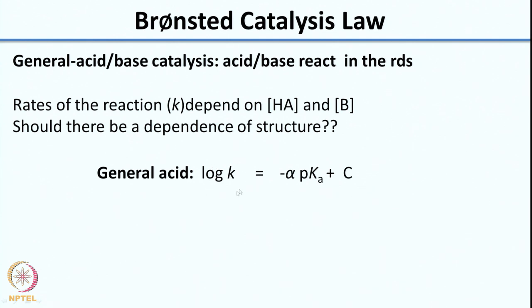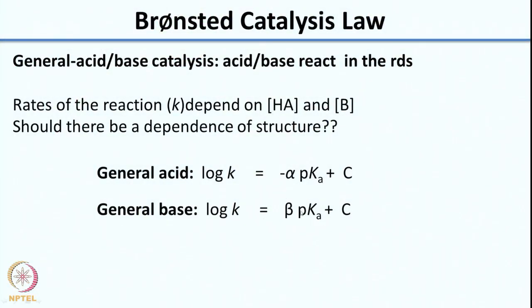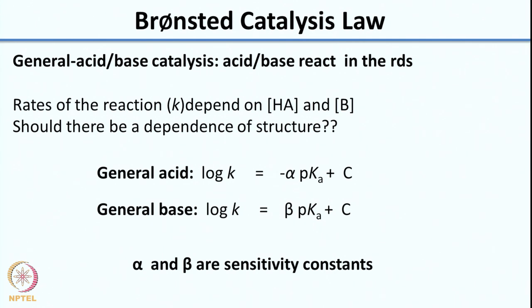In the Brønsted catalysis law, log K = −α·pKa + C for general acid catalysis, where C is a constant representing the intercept of the graph of log K versus pKa, and α is a sensitivity factor that tells you how sensitive your reaction is to the acid strength — in other words, to pKa. Similarly, for a general base, log K = β·pKa + C, and both α and β are called sensitivity constants.